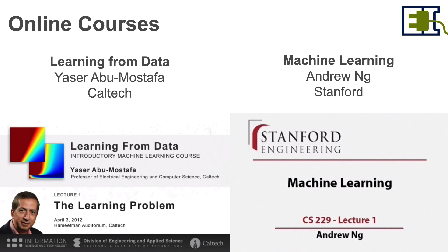If you're just getting started, two excellent online courses to explore are Learning from Data over at Caltech and Machine Learning from Stanford. Yasser Abu-Mustafa at Caltech puts together a great course that touches on the basics of machine learning and data science and also throws in a bit of learning theory, with a pretty strong computer science approach. Andrew Ng's course goes into a number of additional classification methods and techniques, and presents quite an array of starting techniques. I recommend both of these quite highly.